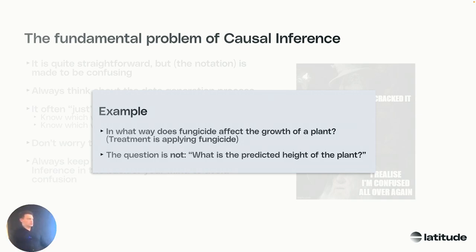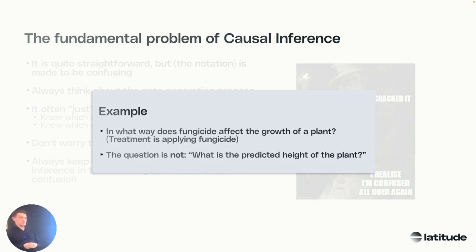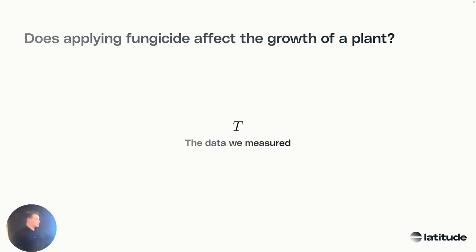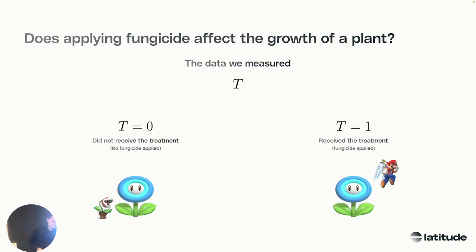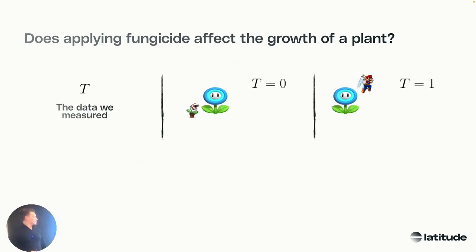Let's carry on with this example. In what way does fungicide affect the growth of a plant? The treatment is applying fungicide. The question is not what is the predicted height of the plant — that's what we would normally do. Now we're interested in the effect of the treatment. T is the data that we've measured: if T is zero, we did not apply the treatment; if T is one, we did apply the treatment. We have a plant with some fungus and a plant with fungicide spray — that's just to keep it easier.